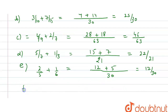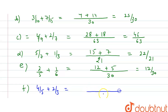Part (f) is 4/5 + 2/3. The LCM of 5 and 3 is 15. Multiplying, 3 × 4 = 12 and 5 × 2 = 10. Adding gives 22/15.